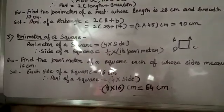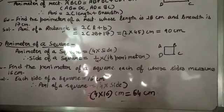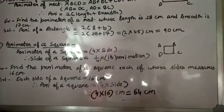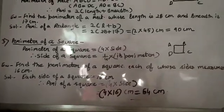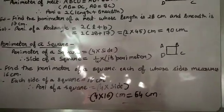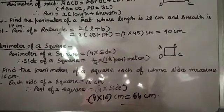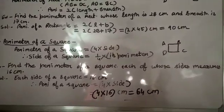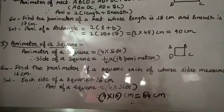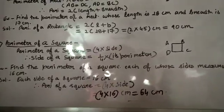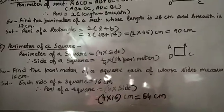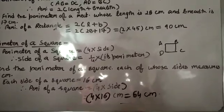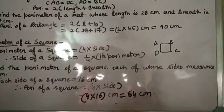Now let's take an example: find the perimeter of a square each of whose sides measures 16 cm. In a square there are four sides, and each side measures 16 cm. So each side of the square is equal to 16 cm. Perimeter of the square is 4 into 16, and you will get 64 cm. So this is the perimeter of the square.